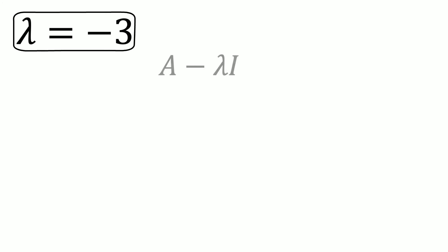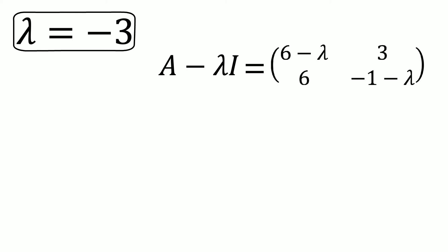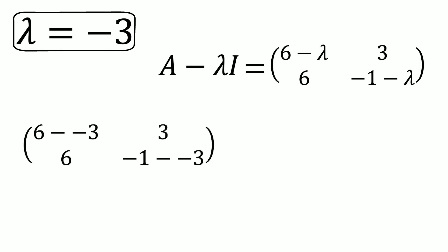We can do the same thing for our other eigenvalue, which is minus 3. Again, we start by remembering that A minus lambda I gave us the matrix with entries 6 minus lambda, 3, 6, and minus 1 minus lambda. We now substitute our eigenvalue of minus 3 for the lambdas. This gives us the matrix with entries 6 minus minus 3, 3, 6, and minus 1 minus minus 3. When we calculate this we find the matrix with entries 9, 3, 6, and 2. Let's call this matrix C.